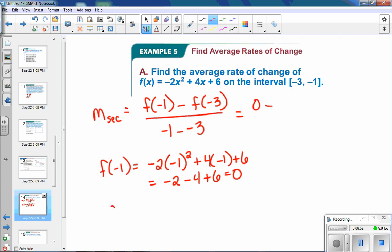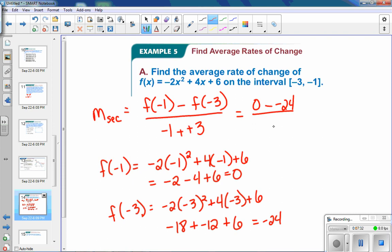When I substitute in a negative 3, I get negative 2 times negative 3 squared plus 4 times negative 3 plus 6. So we have, this is going to be a positive 9 times negative 2 is negative 18 plus a negative 12 plus 6. So we get negative 24 over 1 minus negative 3. This is going to change to adding the opposite. So we end up with a 2. So I have 24 over 2, which is 12. So my average rate of change is 12.